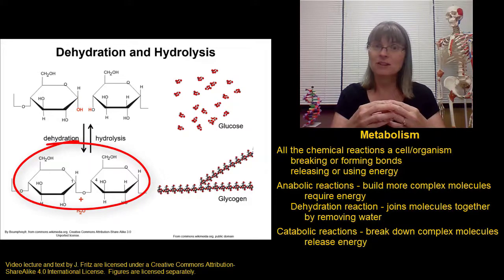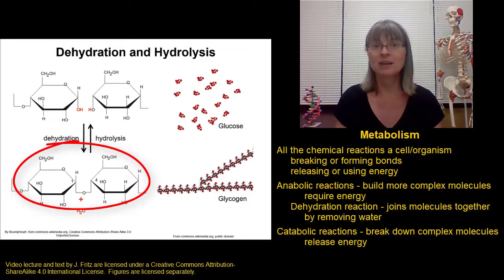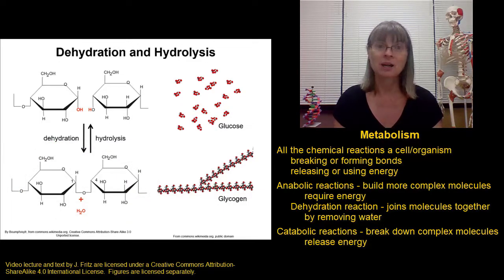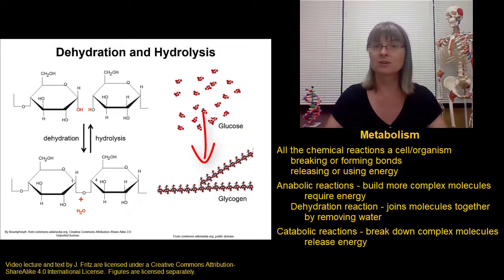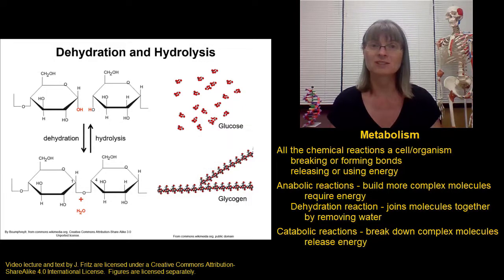Joining molecules together to form something more complex by dehydration. So this is an example of one type of anabolic reaction. Because this is an anabolic reaction, it's going to require energy. So when we're building more complicated things by stringing sugar molecules together, that's going to require energy. We can take lots of separate molecules and string them together into huge long strands of glucose molecules by this process of dehydration synthesis.